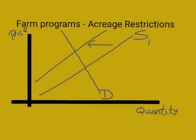That means that the equilibrium, which was originally here — equilibrium price and equilibrium quantity — is now going to be at this new point here. As you can see, the price is higher. And because the demand for food is inelastic, the quantity doesn't really decrease that much, so the total revenue for the farmer will be higher.